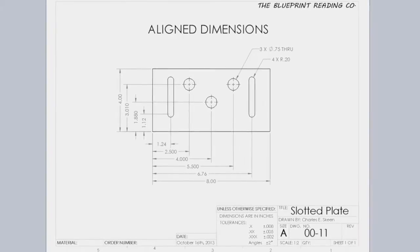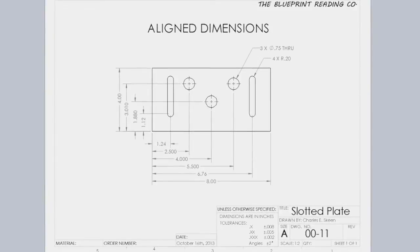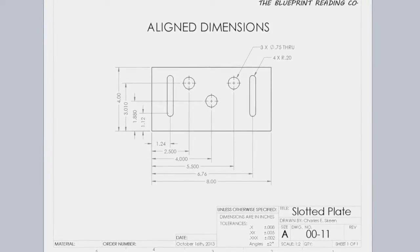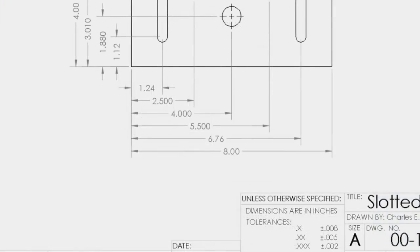Aligned dimensions show dimensions parallel to the feature being dimensioned. Horizontal dimensions are read from left to right, with the bottom of the page facing the reader.